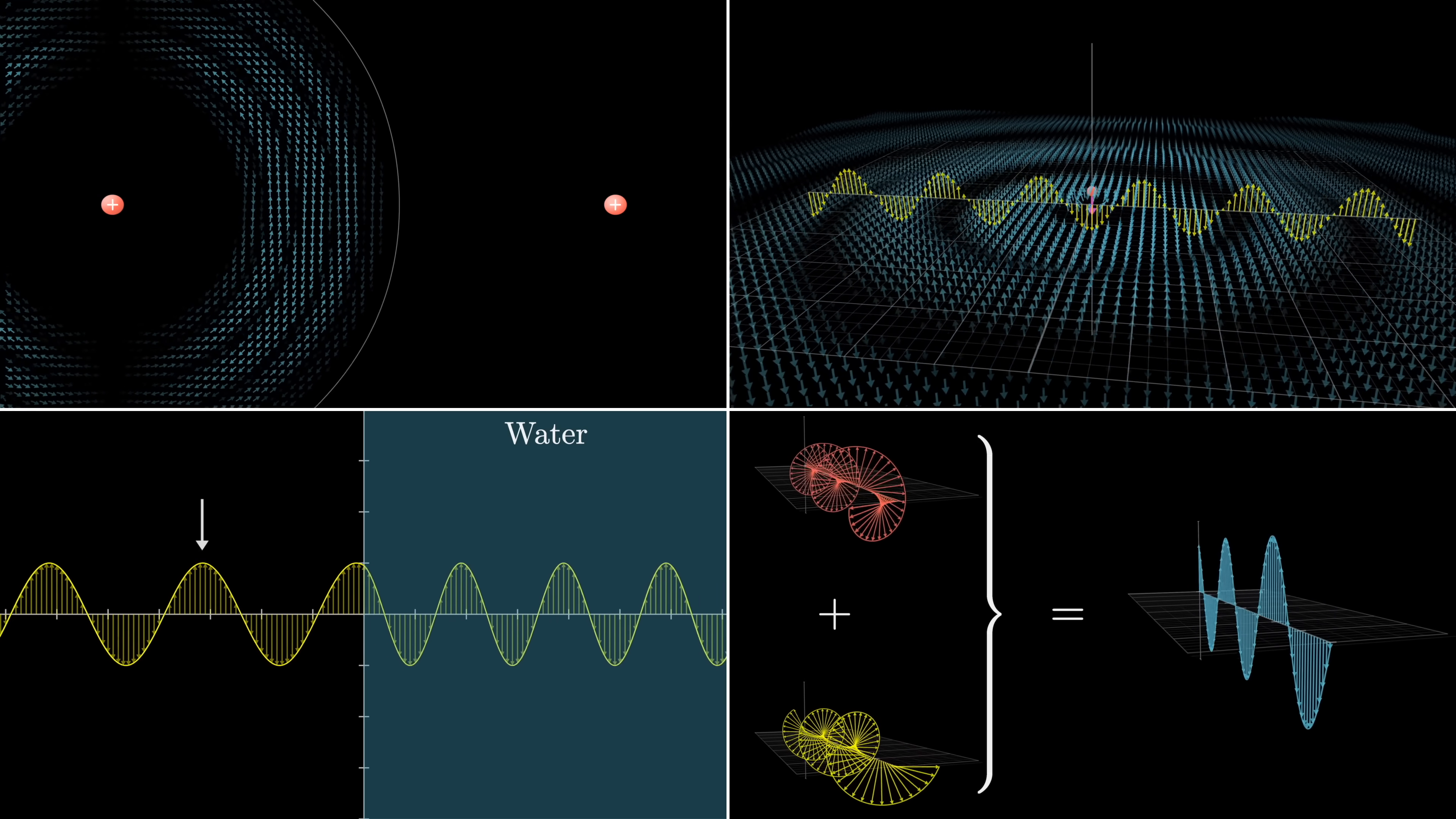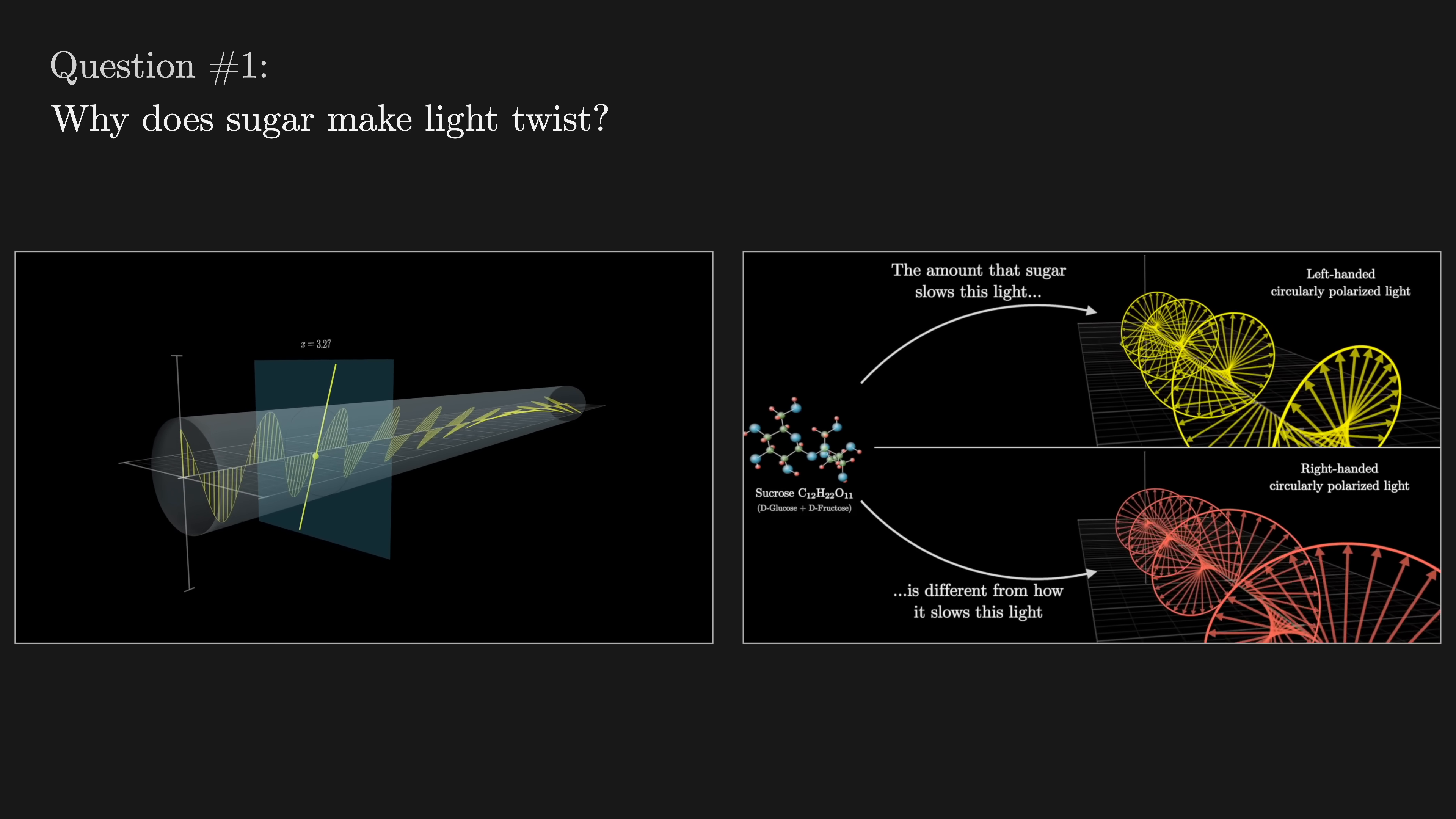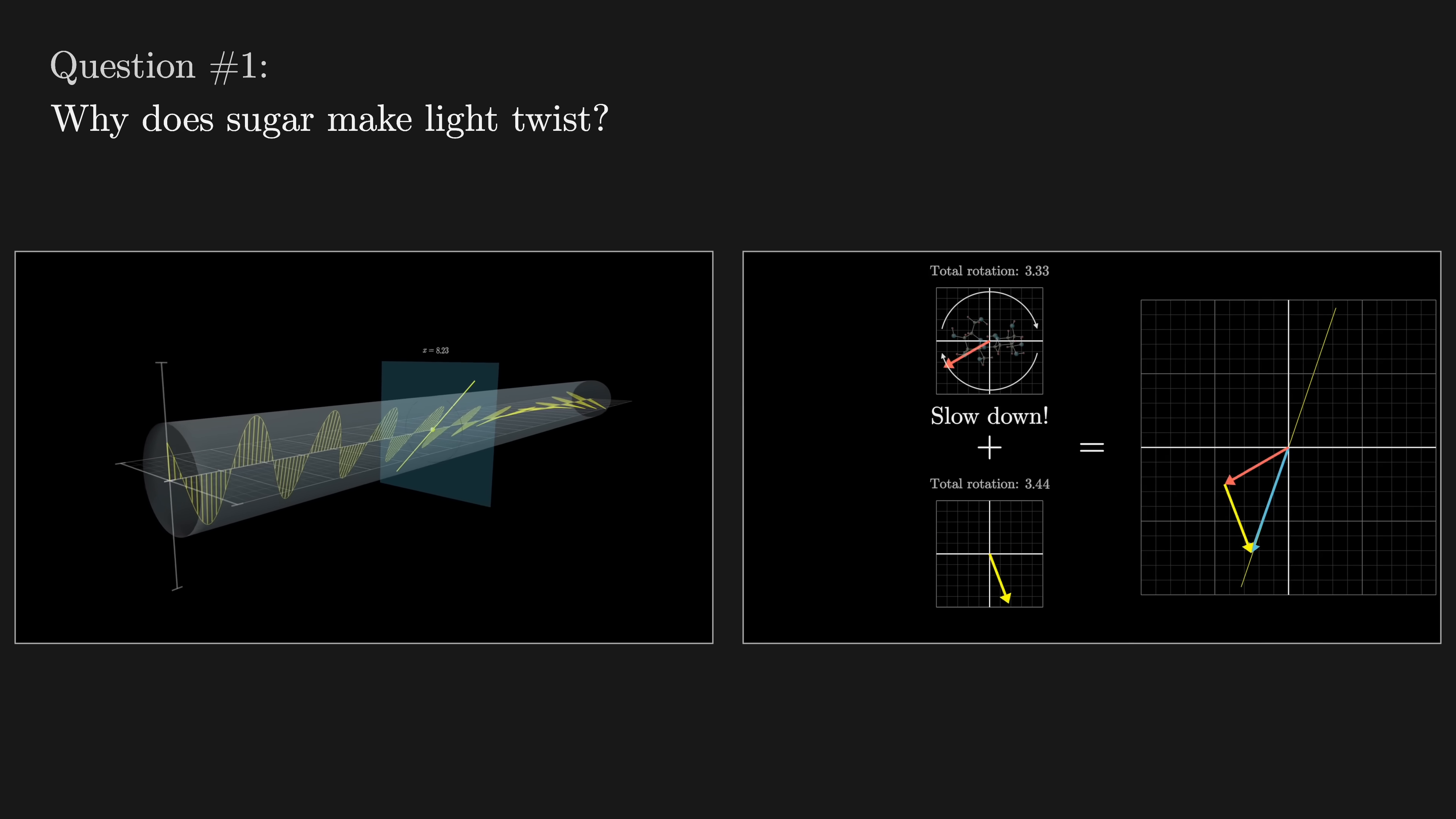You can answer these questions if you have a handful of key intuitions about optics. The first question requires understanding circularly polarized light, since the key is that sucrose is a chiral molecule, which is to say there's a handedness to it. It's different from its mirror image, and the slightly different effects that it has on right-handed versus left-handed circularly polarized light ends up explaining the twist.